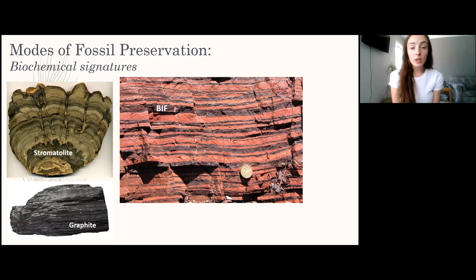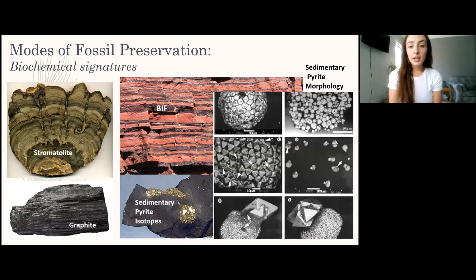The BIF is a biochemical signature indicating oxygen was accumulating, meaning photosynthetic organisms were evolving. We can also get carbon isotopes from graphite that tell us whether photosynthetic organisms were around, because of differences in the way they take up carbon based on isotope, leaving behind carbon isotope ratio signatures in the atmosphere and rock record. Similarly, sulfur isotopes from pyrite can tell us whether organisms drove the isotopic fractionation seen in pyrite.